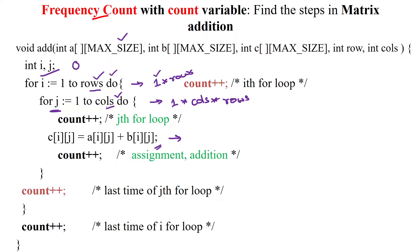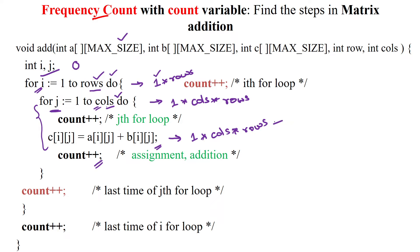The assignment statement also executes column number of times, consuming one unit of time per operation. Since this is inside the outer i-loop, it executes row number of times as well — so the count is incremented row × column times.